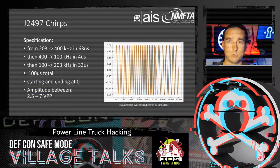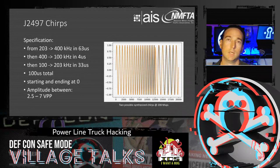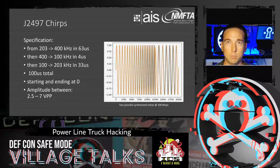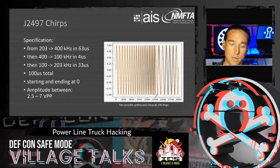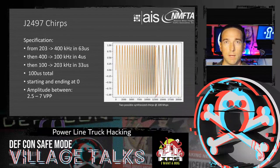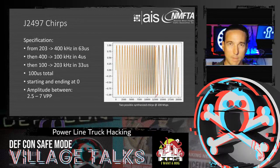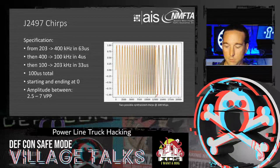The J2497 spec defines the chirp: it sweeps from 200 to 400 kilohertz, then 400 to 100 kilohertz, then 100 to 2-3 kilohertz. Chirps are about 100 microseconds total, starting and ending at zero so they can be concatenated. When transmitted, they should be 2.5 to 7 volts peak-to-peak per spec, though in practice transmitters on trailer equipment tend to send higher than 7 volts peak-to-peak to ensure propagation across the full tractor-trailer length.